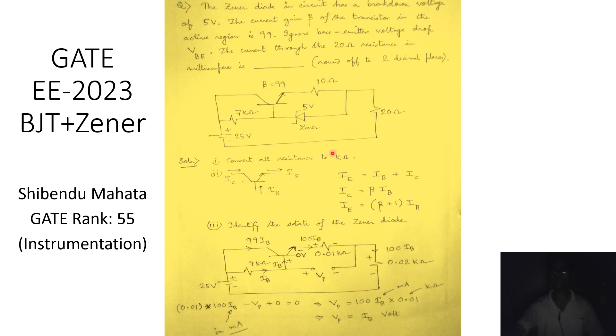The first step in solving circuits like this is to convert all resistances to the same unit. The 7 kilo ohm resistance is already in kilo ohms, but the other two are in ohms. Converting them to kilo ohms ensures all currents in the circuit will be in milliampere. So 10 ohms becomes 0.01 kilo ohm, and 20 ohms becomes 0.02 kilo ohm.